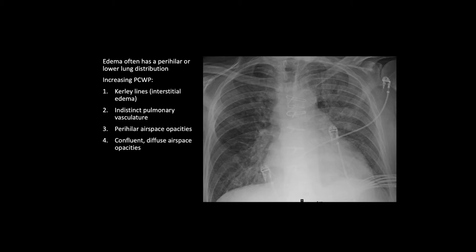Pulmonary edema has a spectrum. In the mildest edema you see Kerley B lines; you may also see a little bit of fluid or thickening of the fissures. You'll progress to having indistinct pulmonary vasculature — in a normal chest X-ray you should be able to see the margins of the pulmonary vessels crisply, but when patients develop pulmonary edema those margins become fuzzy and it's hard to exactly define where the edge of the pulmonary vessels are.